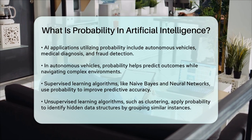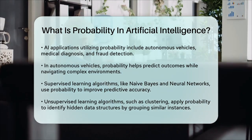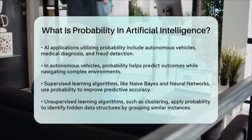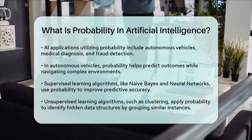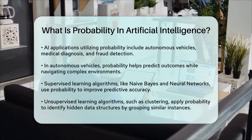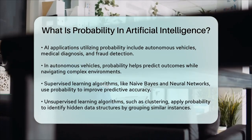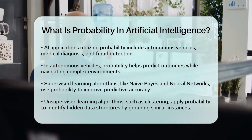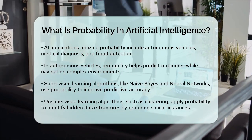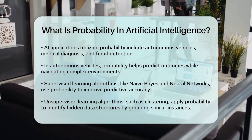In summary, probability in AI is about quantifying uncertainty and making informed decisions based on the likelihood of different events. It's a fundamental tool that enables AI systems to learn, adapt, and make predictions in complex and uncertain environments. Whether it's natural language processing, computer vision, or autonomous systems, probability theory is the backbone that helps AI navigate and make sense of the world.